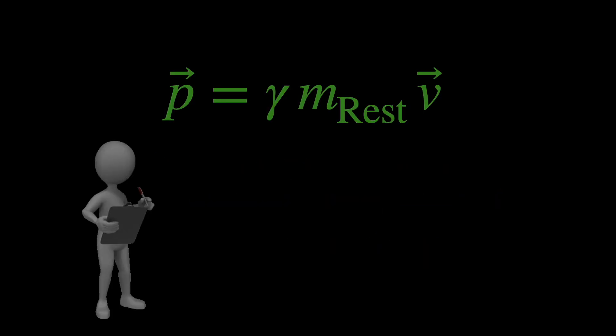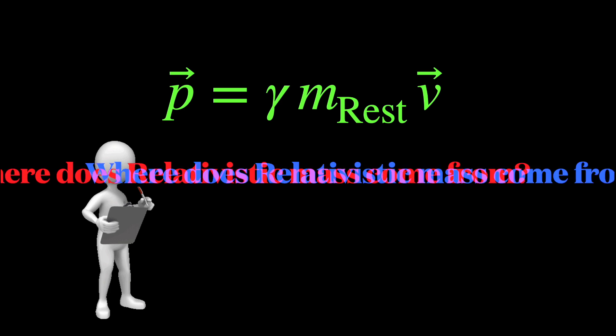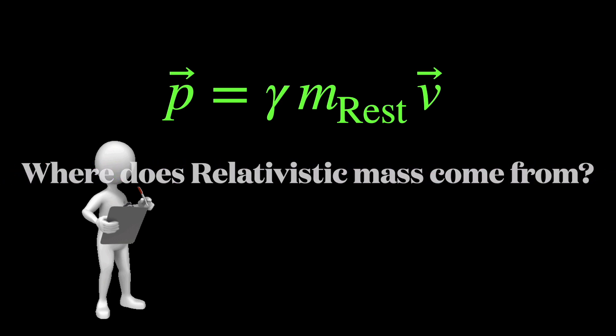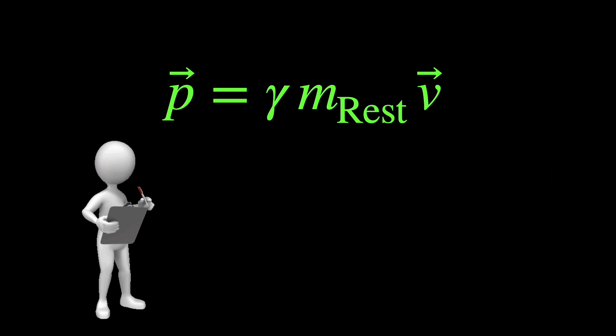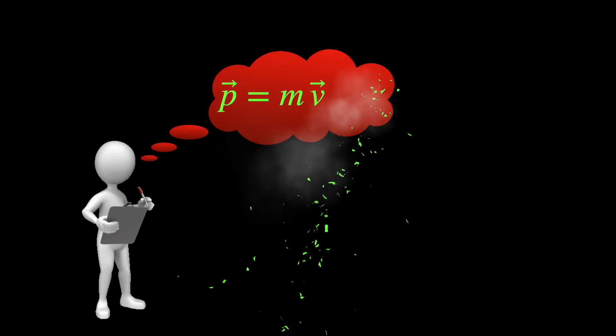Now, let us go back to the observer who was trying to calculate the mass of a very high speed object by measuring its momentum and velocity. He is unaware of the relativistic definition of momentum and uses the Newtonian version instead.